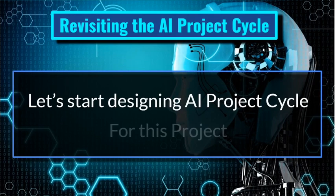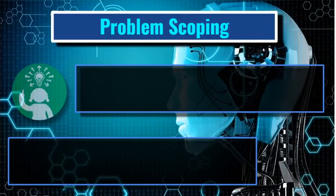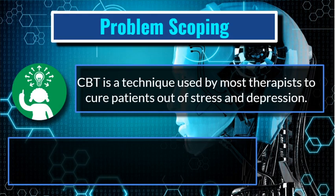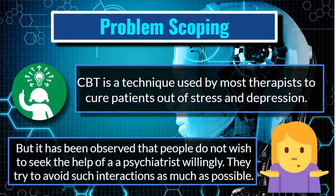So what is the problem? With this problem we are going to start the AI project cycle. CBT is the first stage. The problem is: CBT is a technique used by most therapists to cure patients of stress and depression, but it has been observed that people do not wish to seek the help of a psychiatrist willingly. There is a mindset — no one wants to go to a psychiatrist — because everyone thinks a psychiatrist is needed only in the case of mental problems. They try to avoid such interactions as much as possible.